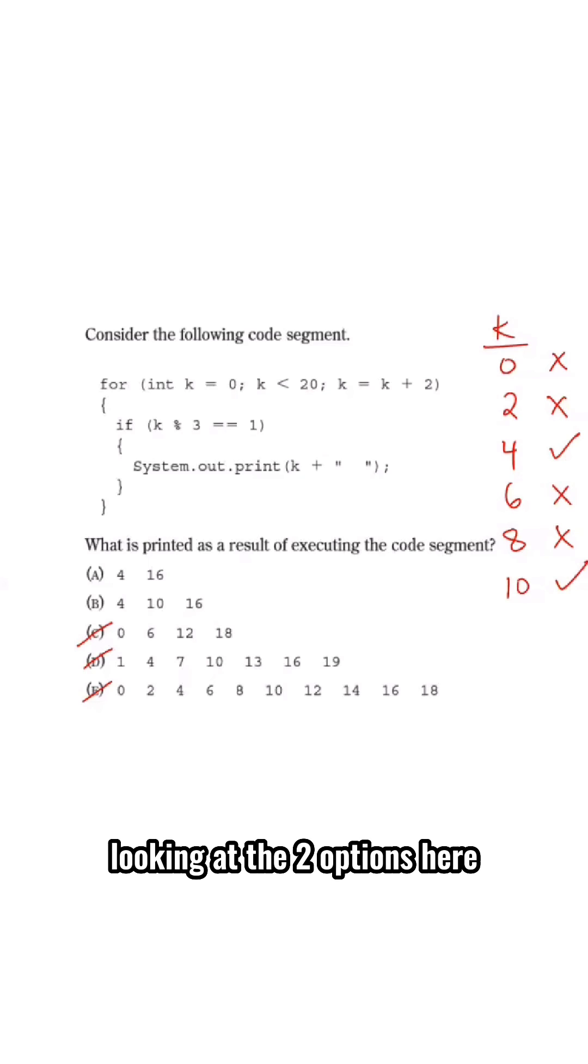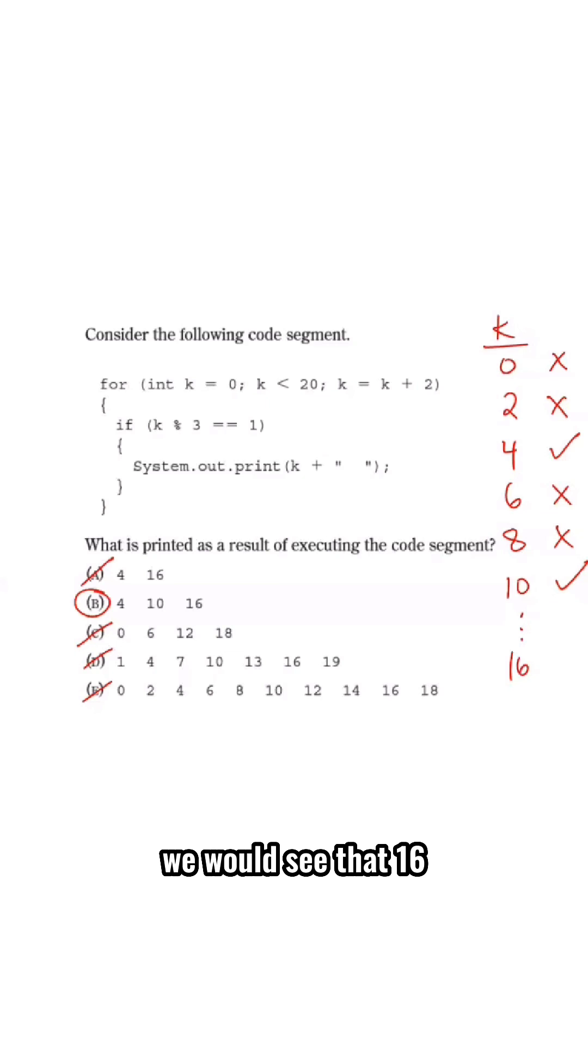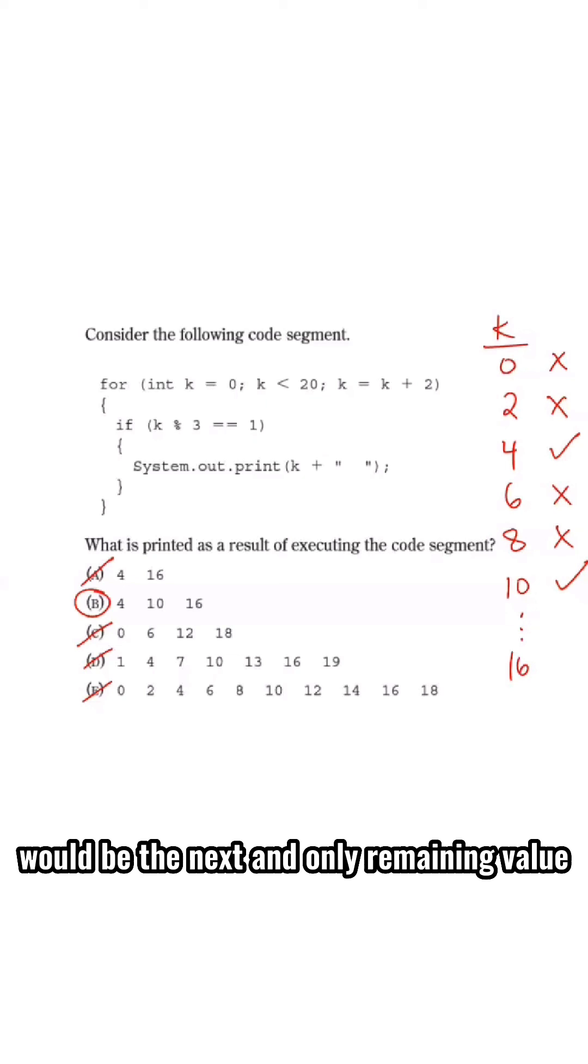Looking at the two options here, that eliminates A, and therefore our answer must be B. If we were to follow through on the execution, we would see that 16 would be the next and only remaining value where 16 mod 3 is also equal to 1, and so that gets printed as well.